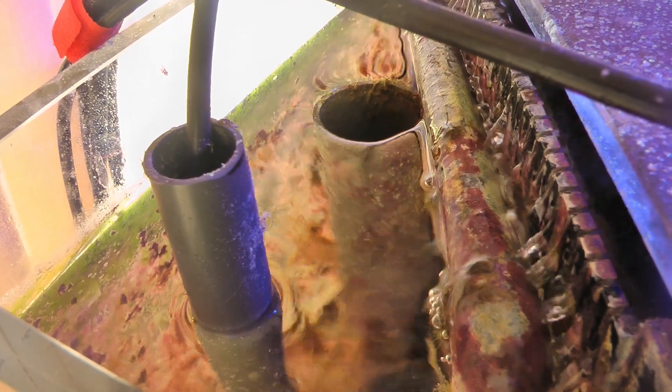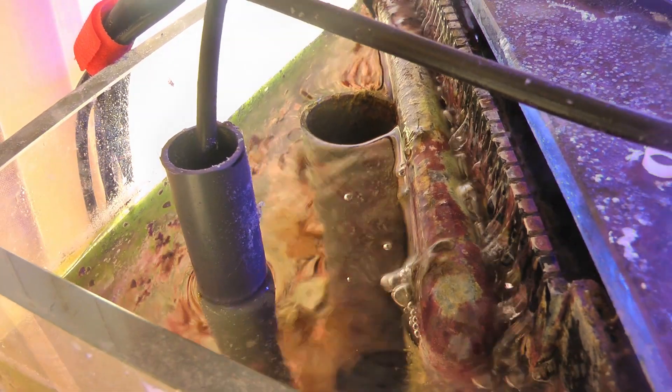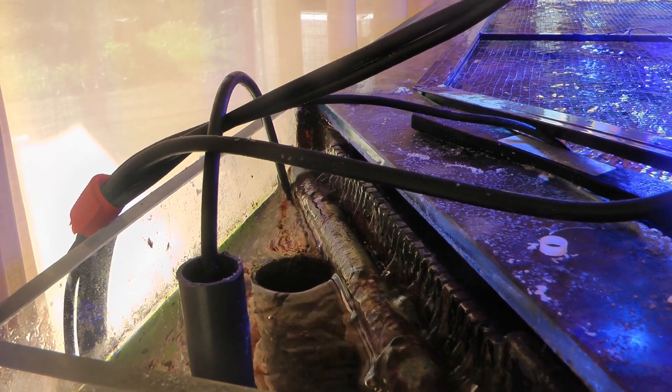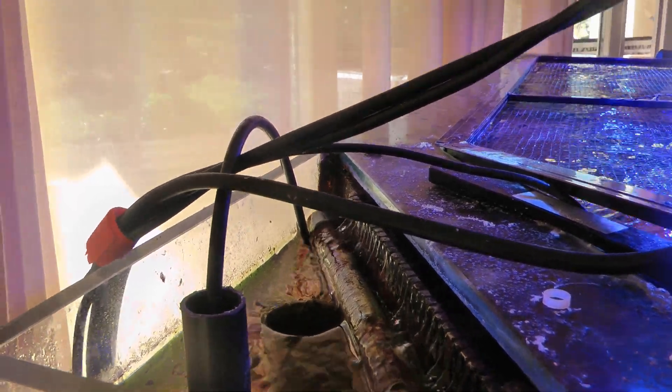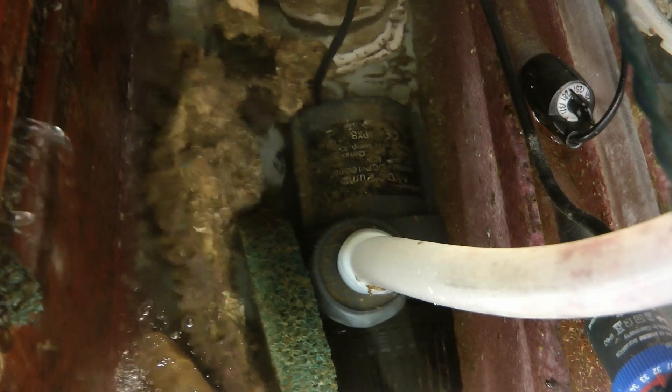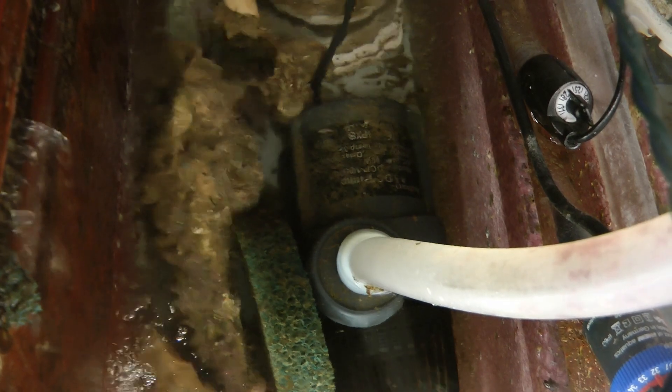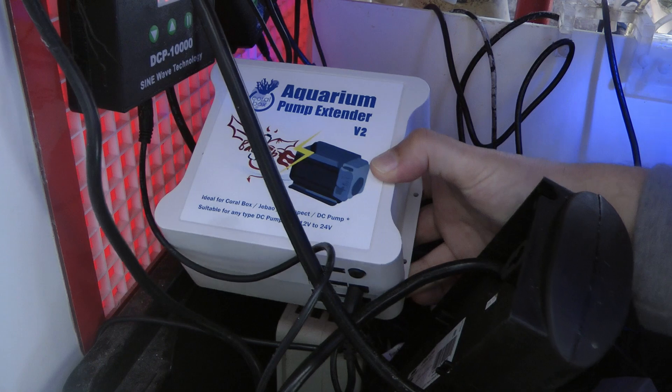If the power is out for a long time, the tube still sucks out water from the overflow, which would eventually break the siphon after the overflow is empty. But this will only happen if the return pump fails, because I have a backup battery for the return pump.